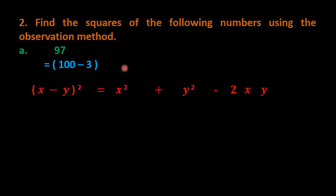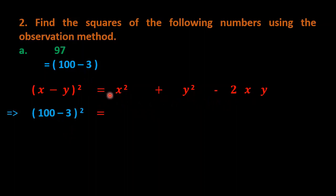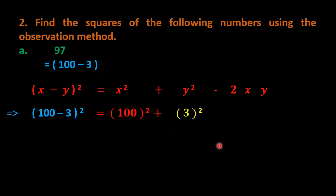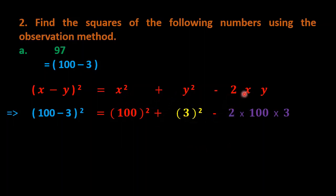Substituting x = 100 and y = 3 into the right-hand side of the formula, we get: 100² + 3² − 2 × 100 × 3.